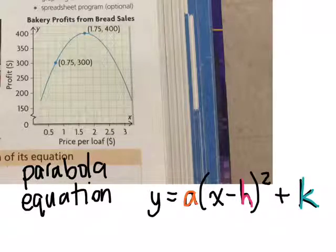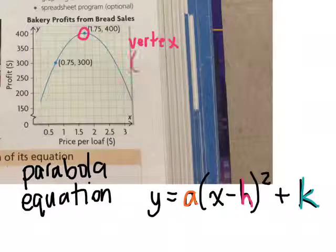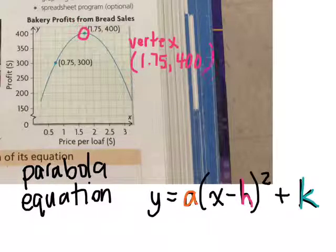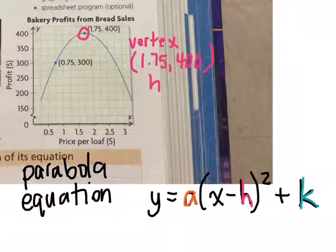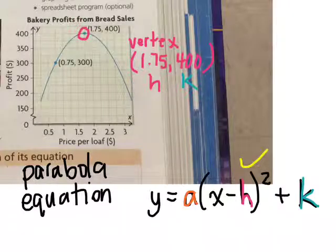The vertex. So this would be the vertex, correct? The vertex is located at 1.75, 400. So I know, what is the h value then? 1.75. And what is k? 400. So I know h, k.